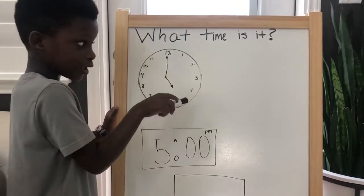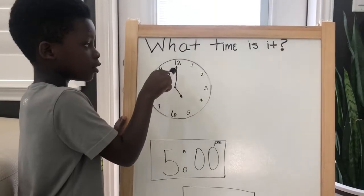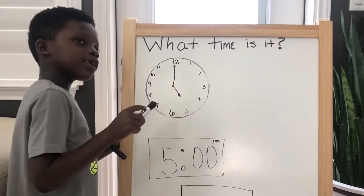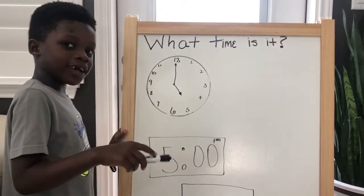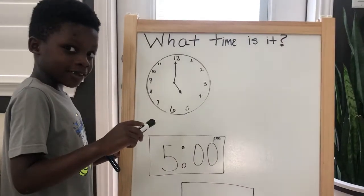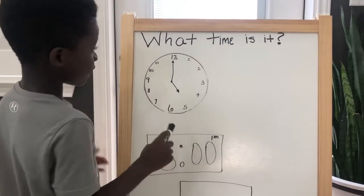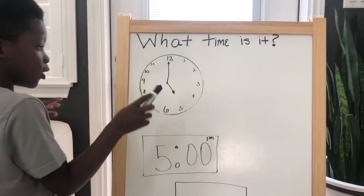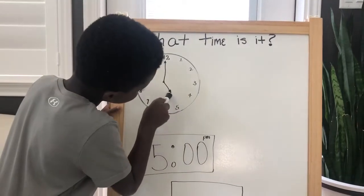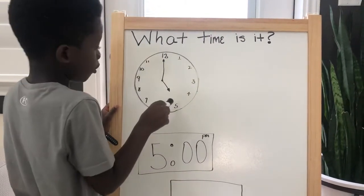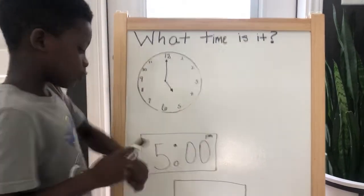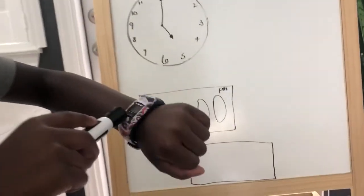This is the hour hand, this is the minute hand. In my next video I may or may not show you the second hand. Anyways, as you can see it's pointing to the five, so it's five o'clock.